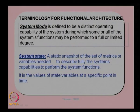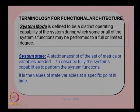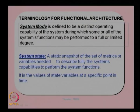Another terminology is the system state. A system state is a static snapshot of the set of metrics or variables needed to fully describe the system's capabilities to perform the system functions. For example, taking the laptop in power save mode, you can identify the power rating, current drawn, status of memory, processor speed, and monitor brightness. These metrics and parameters give you the system state — it is the values of state variables at a specific point in time.